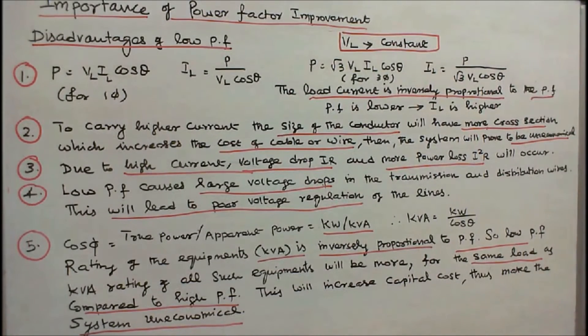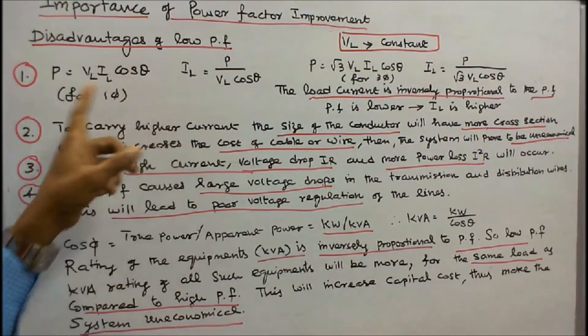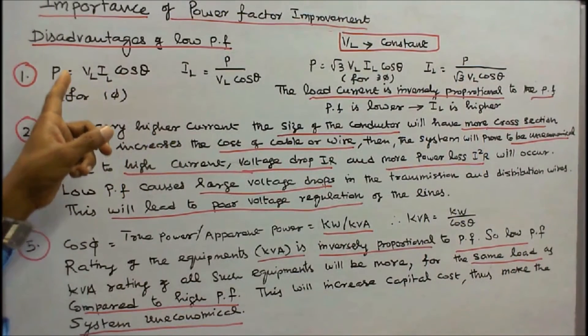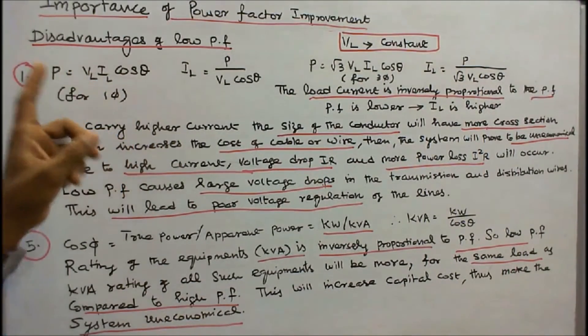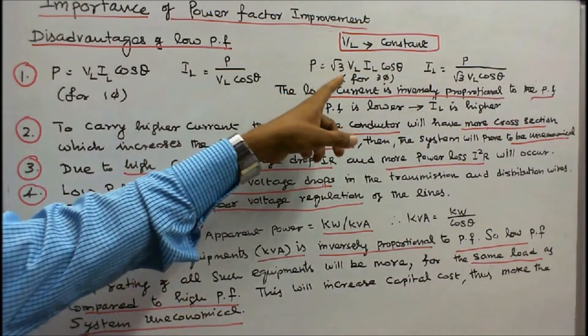Disadvantages of low power factor. Number 1: We know that real power P is equal to VL IL cos θ for single phase. VL is the line voltage, IL is the line current. For 3-phase, P is equal to √3 times VL IL cos θ.